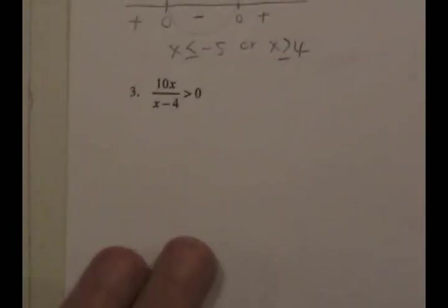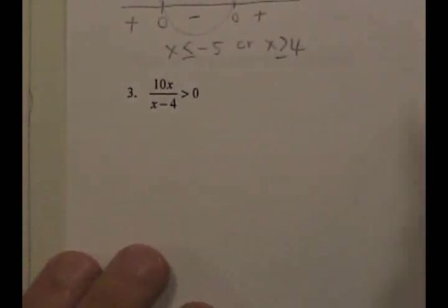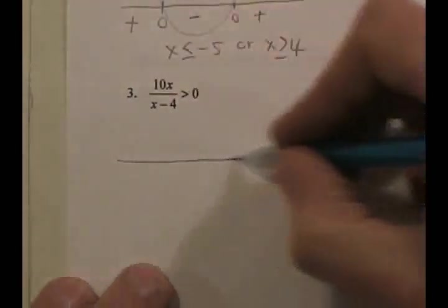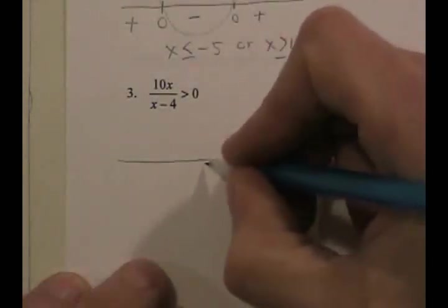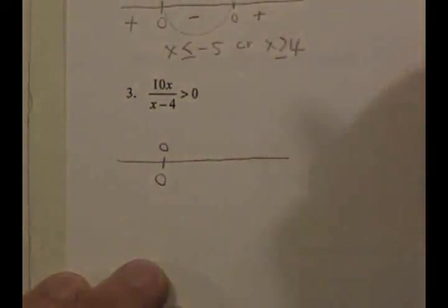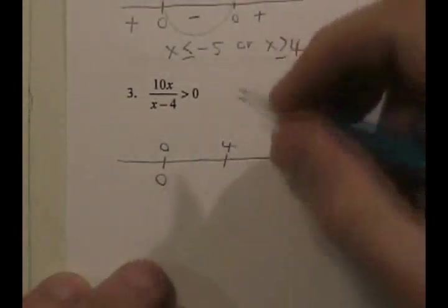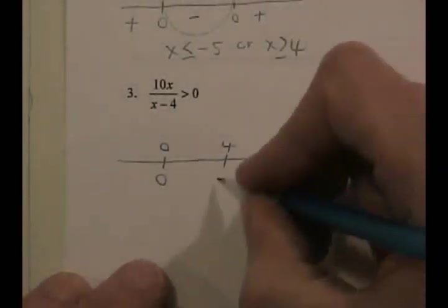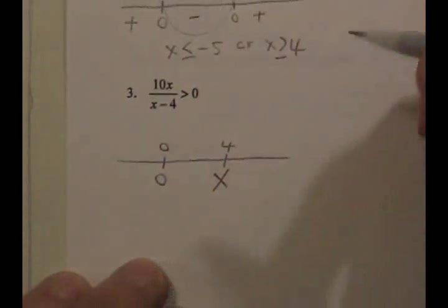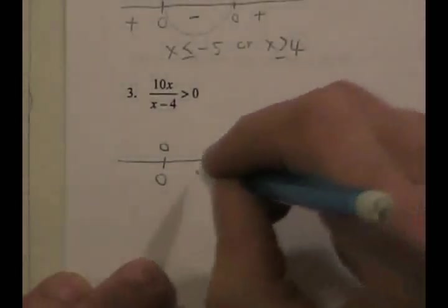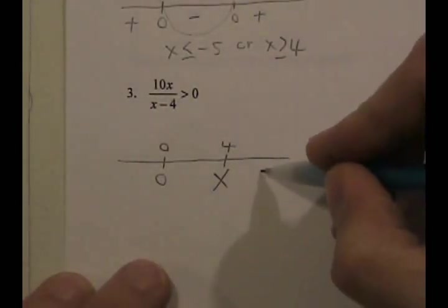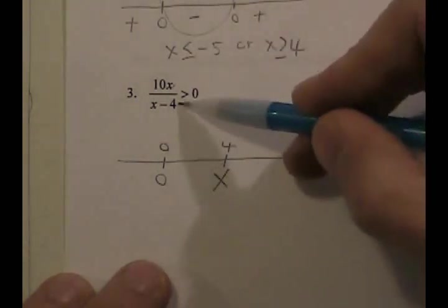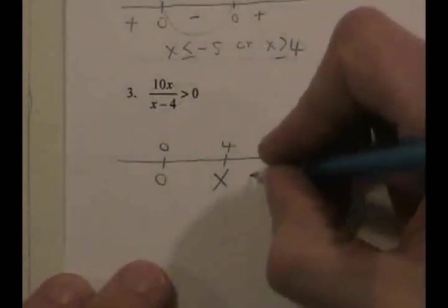For the rational inequality, this is all pre-set up for us. What you've got to do is draw out your number line and mark down any values of x that make it equal to zero or make it undefined. This thing is zero at x equals zero, and if x equals four you get undefined — division by zero. Then pick test points in the three regions. A number greater than four makes numerator positive and denominator positive, so positive over positive is positive.